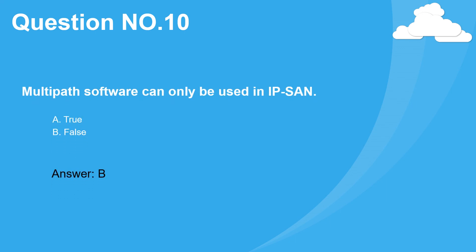Question 11. Multipath software can only be used in IP SAN. A. True. B. False. Answer: B.